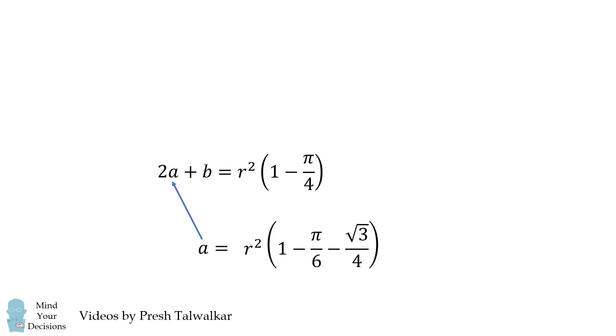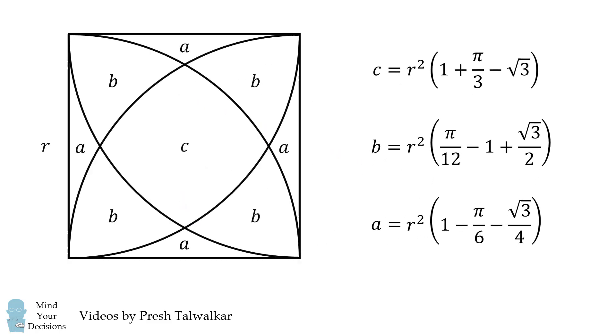Knowing the value of a, we can substitute back and get the value of b. Knowing b, we can substitute back and get the value of c. And there you go. This is the solution to our problem. We've calculated the areas of a, b, and c using only geometry and a little bit of algebra.